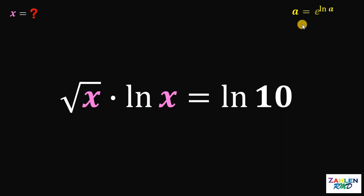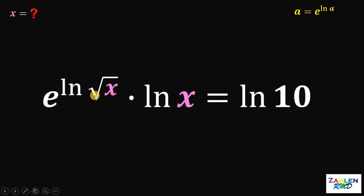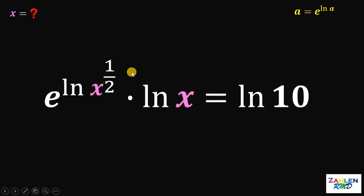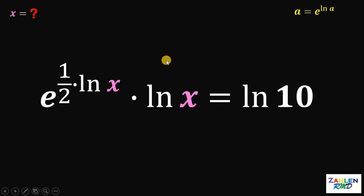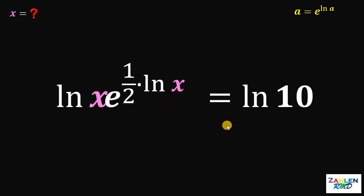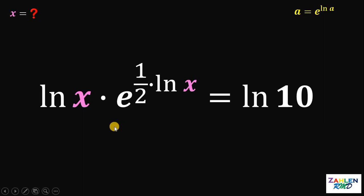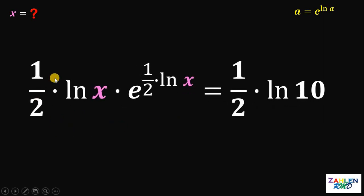Also take note that if we have a, it is equivalent to e raised to ln of a. Therefore, the square root of x can be written as e raised to ln of a. Also, square root of x can be written as x raised to 1 half, so ln of x raised to 1 half equals 1 half multiplied by ln of x. Now let's switch the position of e raised to 1 half times ln of x and ln of x. Then we multiply both sides by 1 half, giving us 1 half times ln of x multiplied by e raised to 1 half times ln of x equals 1 half times ln of 10.